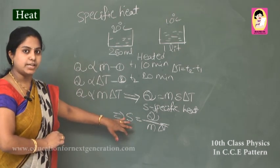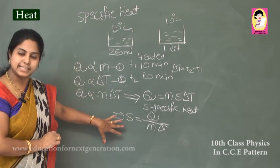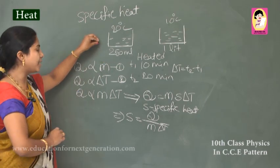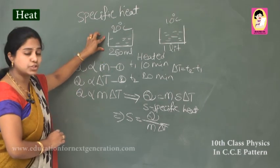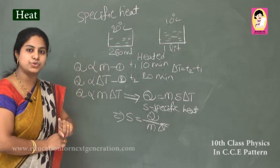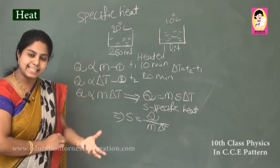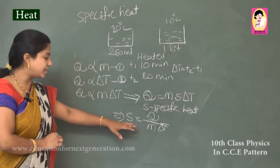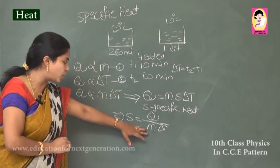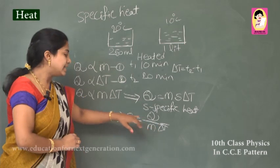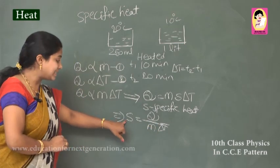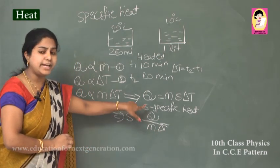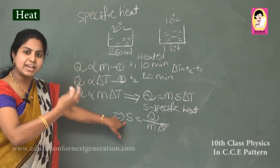The definition of specific heat is: the amount of heat required to raise the temperature of 1 gram of a substance by 1 unit. From the equation s equals Q divided by m times ΔT, we can see that s is directly proportional to Q and directly proportional to ΔT — so if heat absorption increases, specific heat also increases.